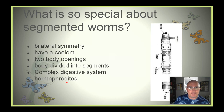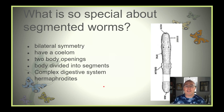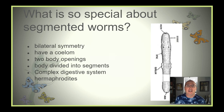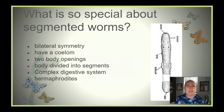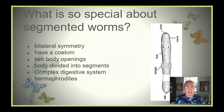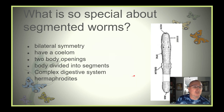They're also hermaphrodites. This is a huge advantage to members of this group. We often use earthworms as an example. They're burrowing underground, moving around, and they don't often come in contact with other earthworms. It's not easy to send out a signal to call for a potential mate. So being hermaphrodites is a huge advantage because if any two earthworms encounter each other, they can reproduce. Any worm is looking for any other worm when it is time for reproduction.